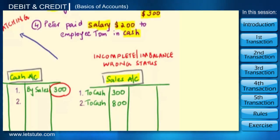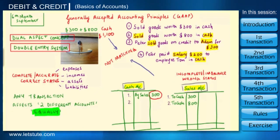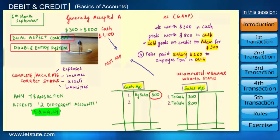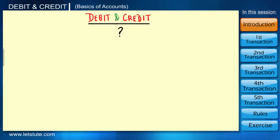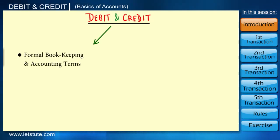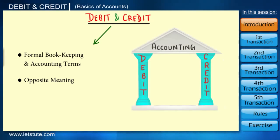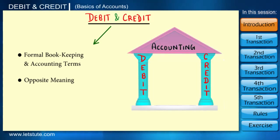An incomplete or imbalanced record will show a wrong status. Now let's go one step further and talk about what these two equal effects are. One of these two effects is always a debit and the other effect is always a credit. So what are these terms debit and credit? They are just formal bookkeeping and accounting terms that have opposite meanings — these are like the pillars of accounting on which the entire accounting is based.